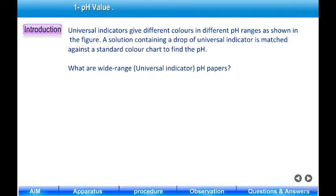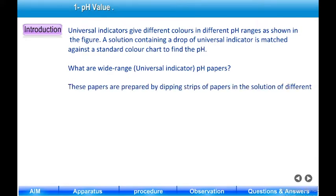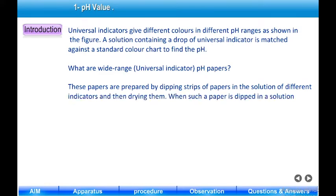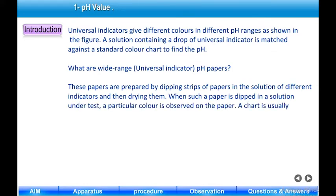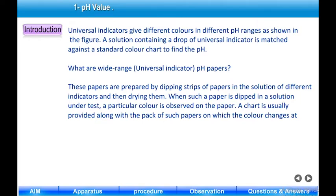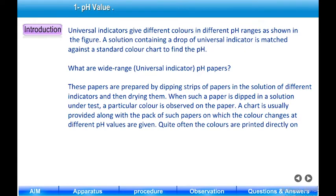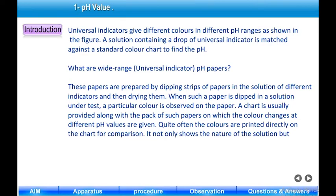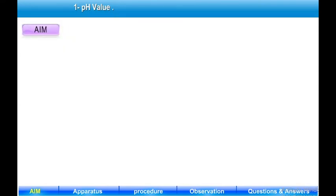A solution containing a drop of universal indicator is matched against a standard color chart to find the pH. Wide range or universal indicator pH papers are prepared by dipping strips of paper in solutions of different indicators and then drying them. When such a paper is dipped in a solution under test, a particular color is observed. A chart is provided along with the pack of such papers showing color changes at different pH values. It not only shows the nature of the solution but also indicates the approximate pH value.